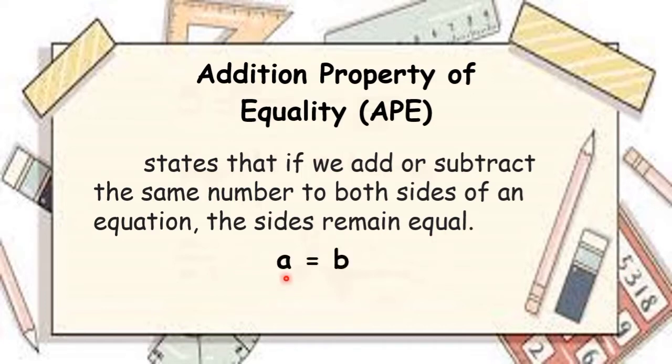So for example, we have a is equal to b. If we add both sides with c, then a plus c is equal to b plus c. And if we simplify this, it will remain equal.